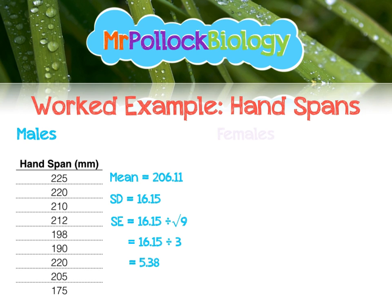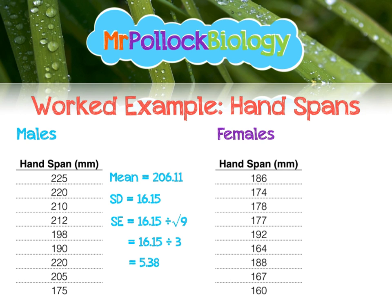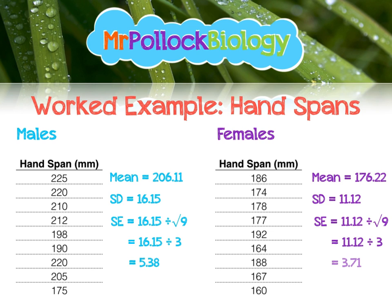Repeat the same thing for females. There's the female data. Mean: 176.22 mm. Standard deviation: 11.12 mm. Standard error: 11.12 divided by root 9, which is the same as 11.12 divided by 3, which is 3.71.